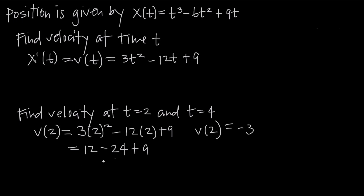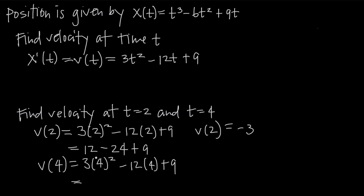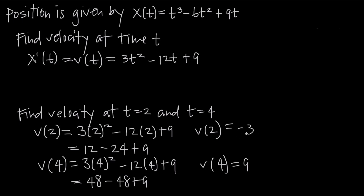Now let's look at the velocity of the particle after 4 seconds: v of 4 equals positive 9. So at t equals 2, the velocity is negative, and at t equals 4, the velocity is positive. When velocity is negative, the particle is moving backwards. When velocity is positive, the particle is moving forwards, because velocity indicates direction. A negative velocity means moving backwards, and a positive velocity means moving forwards.